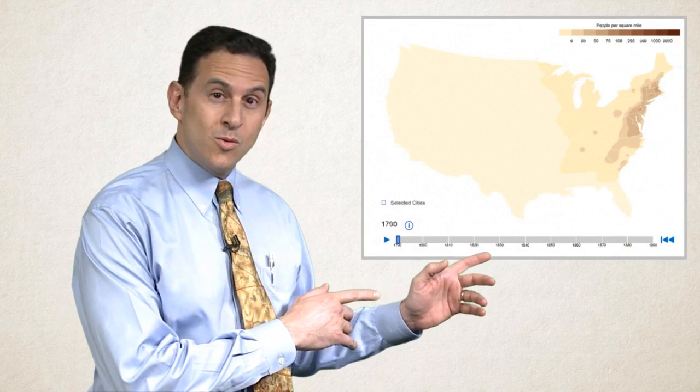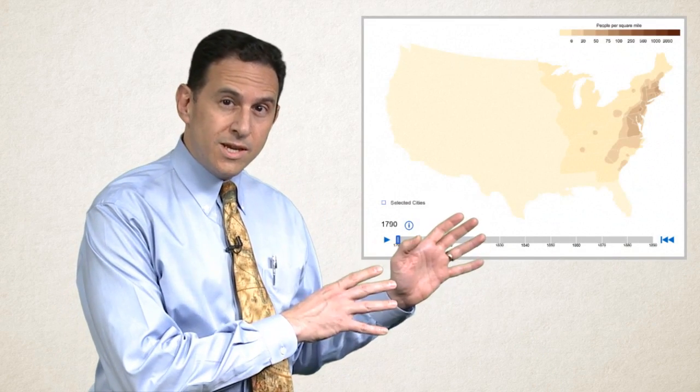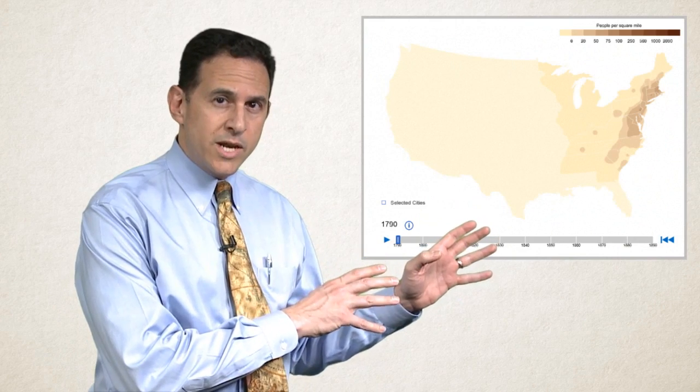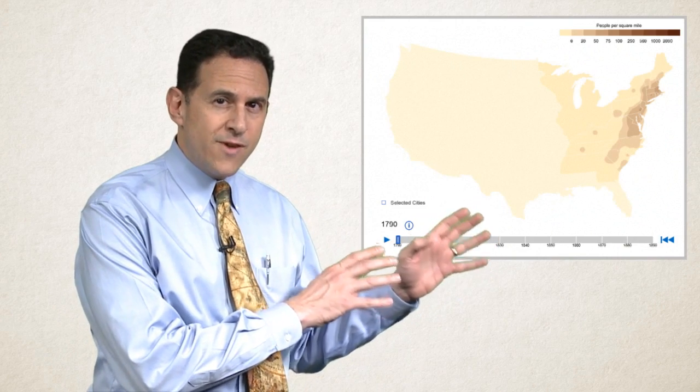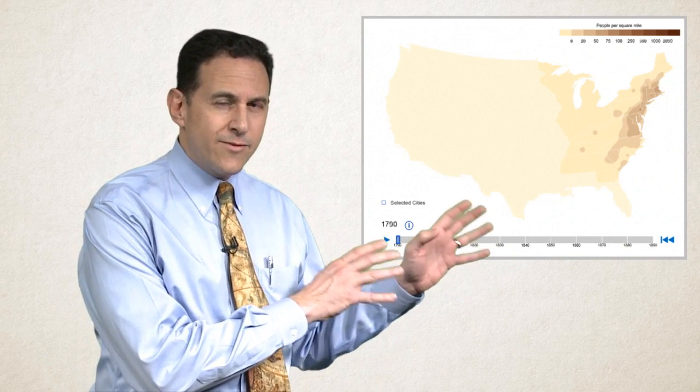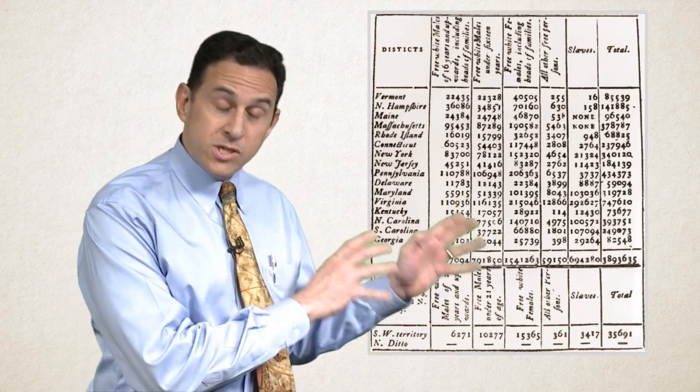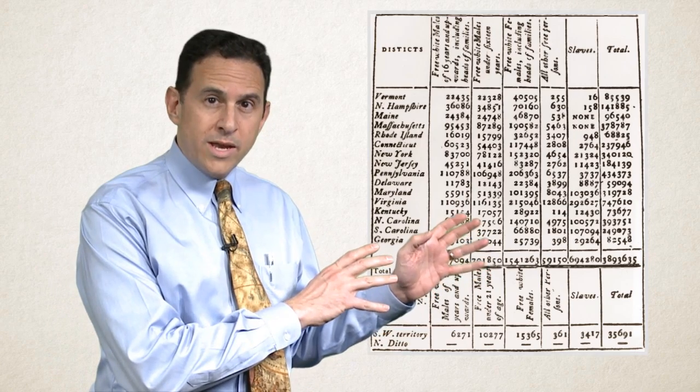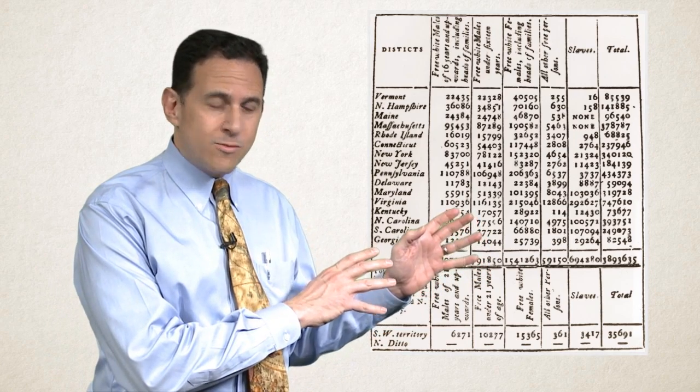The federal statistical system has been operating almost since the beginning of our nation. Here we see a picture of the population of the United States at the very beginning, 1790. This was a time when what had been 13 colonies still had the wilderness at their very backyards.